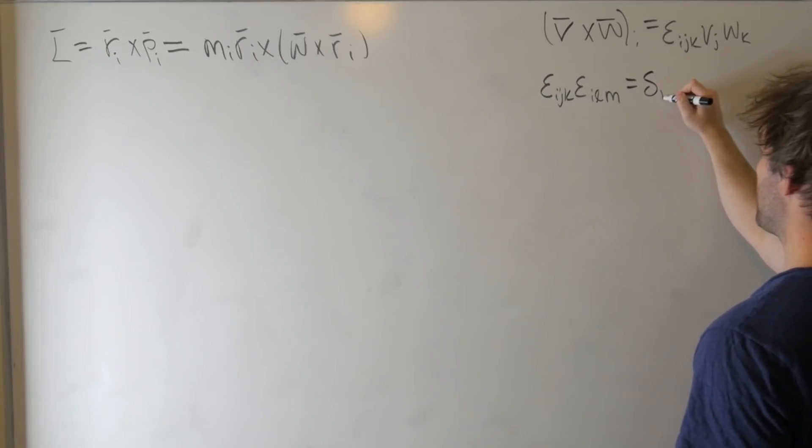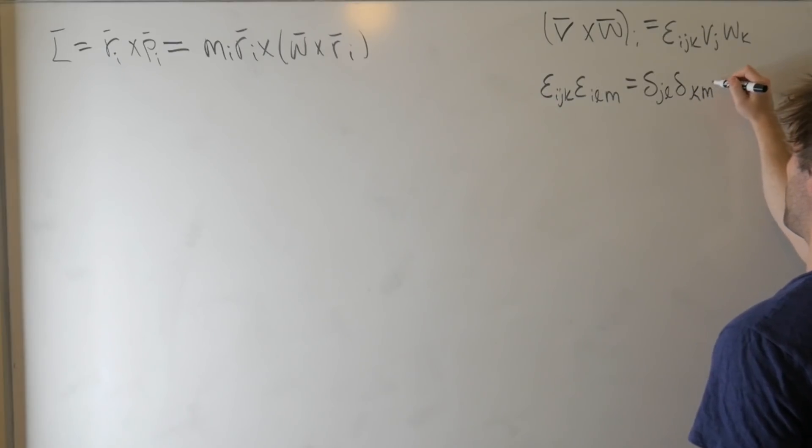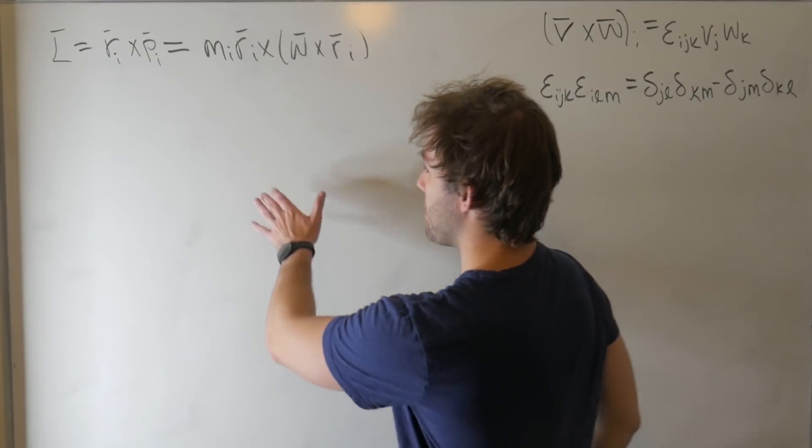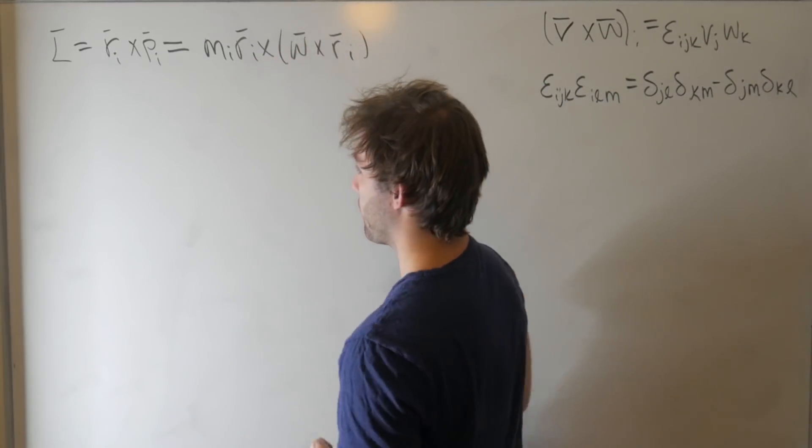This is just delta_jl delta_km minus delta_jm delta_kl. So this is important. This is all that we need in order to expand this double product.